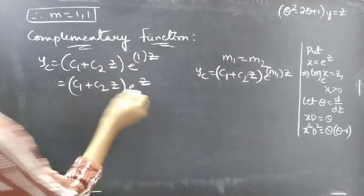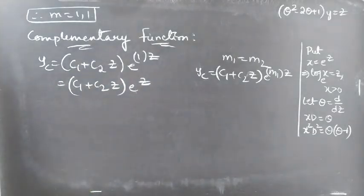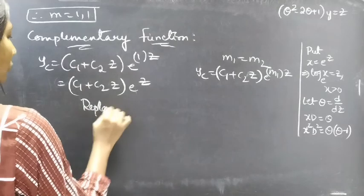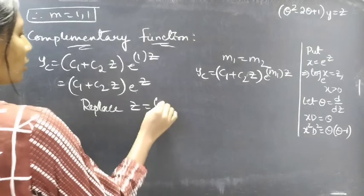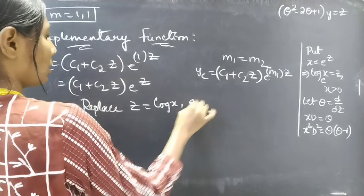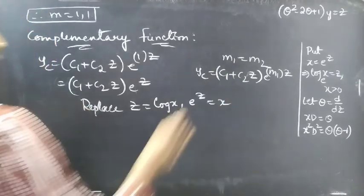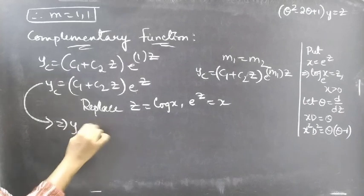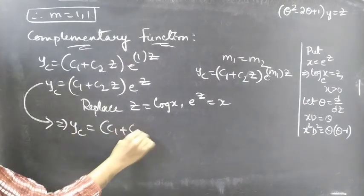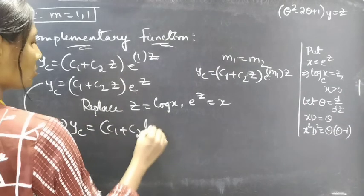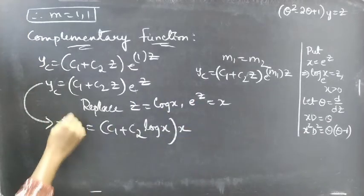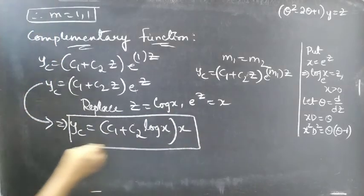For two equal real roots m₁ = m₂ = 1, the complementary function is yc = (c₁ + c₂z) · e^(1·z) = (c₁ + c₂z) · e^z. Now, yc is in terms of z; we need to write it in terms of x. Replace z by log x and e^z by x, so yc = (c₁ + c₂ log x) · x.